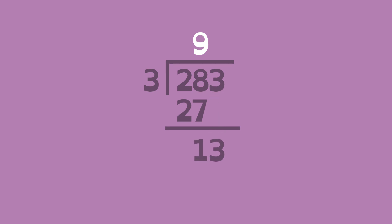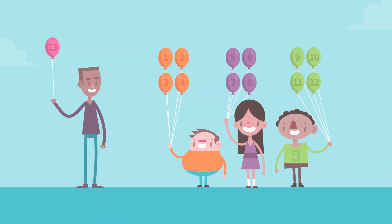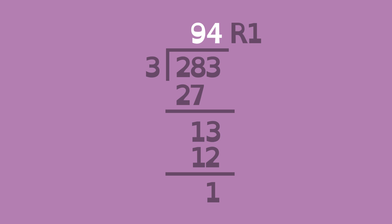Now, bring down the 3 and divide by 3. 13 can be divided into 3 groups of 4 with 1 left over. Write the 4 here and subtract to get a remainder of 1.